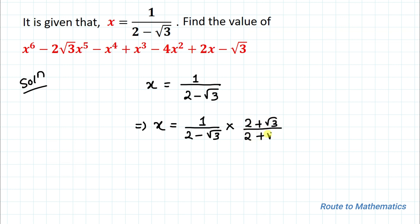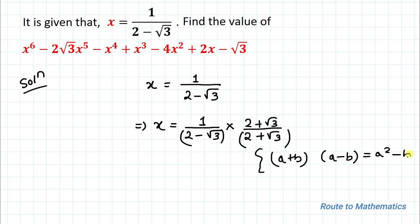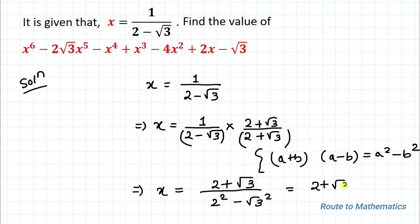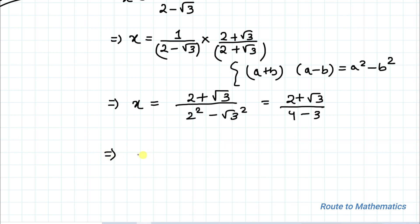To apply rationalization, we multiply (2 plus √3) in the numerator and (2 plus √3) in the denominator as well. We have (2 minus √3) and (2 plus √3), so we can apply the algebraic identity (a + b)(a − b) = a² − b². Applying this identity, x becomes (2 plus √3) divided by (2² minus √3²), which equals (2 plus √3) divided by (4 minus 3). So x equals 2 plus √3.